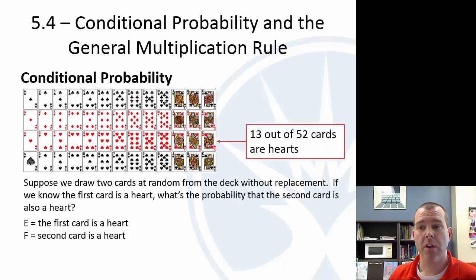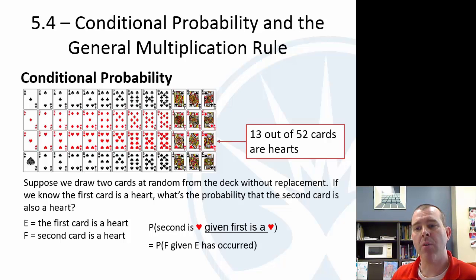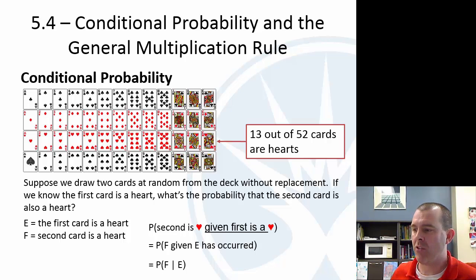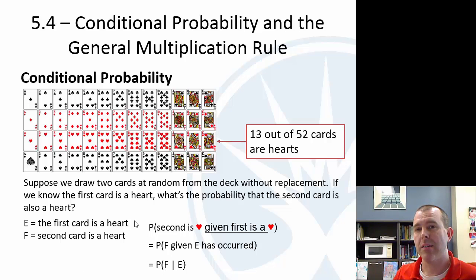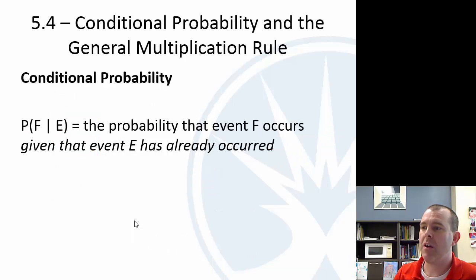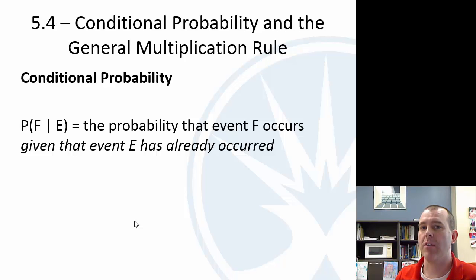We have 13 hearts, so we want to find the probability that the second is a heart given that the first is a heart. In probability language, this is the probability that F occurs given that E has already occurred. We abbreviate that with a vertical bar: P(F | E), read as 'the probability of F given E.' If the first card is a heart, there's one less heart and one less card overall, so the probability that the second is a heart knowing the first is a heart would be 12 out of 51. That is conditional probability.